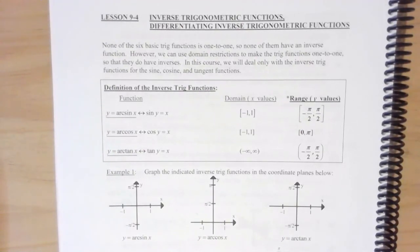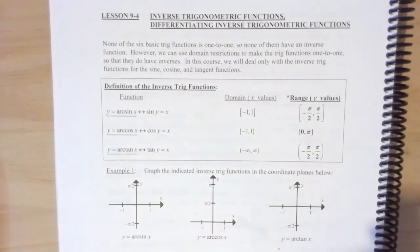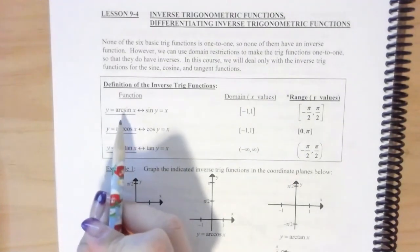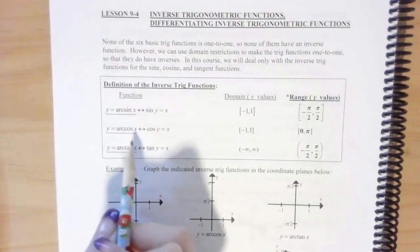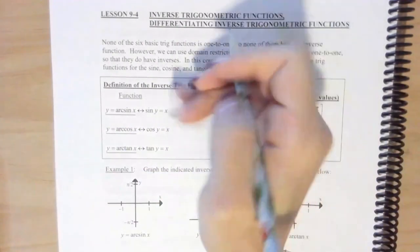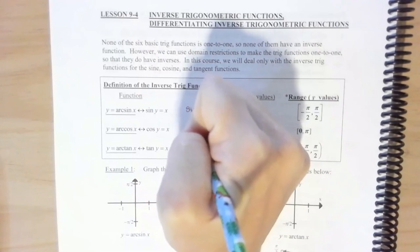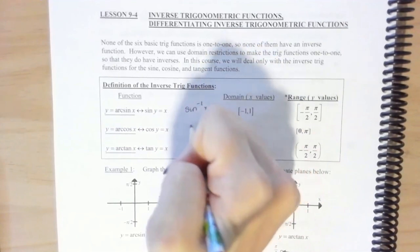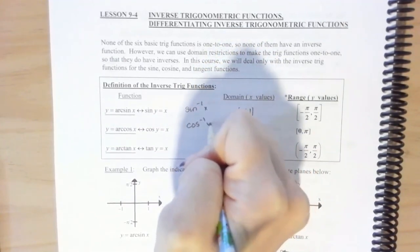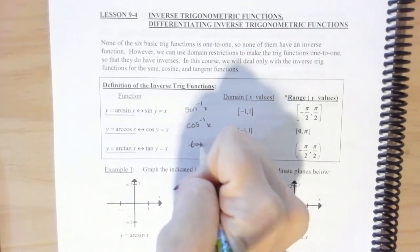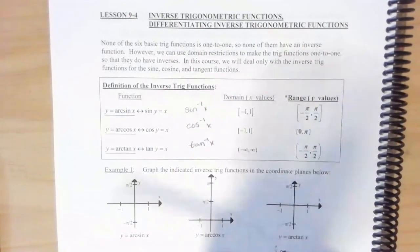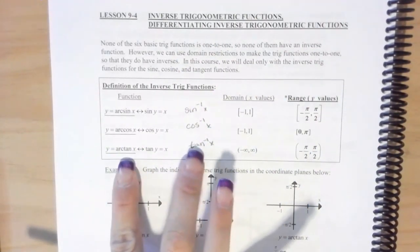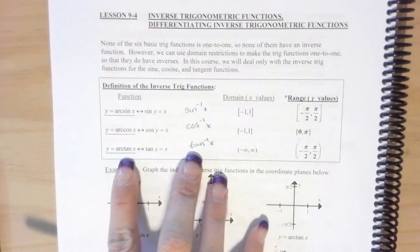Today we're going to do the inverse trig functions. Inverse means switching x and y and then solving for y. We have arc sine, arc cosine, and arc tangent — last year we saw these written as sine to the negative one of x, cosine to the negative one of x, and tangent to the negative one of x. These two notations are the same and can be written either way.